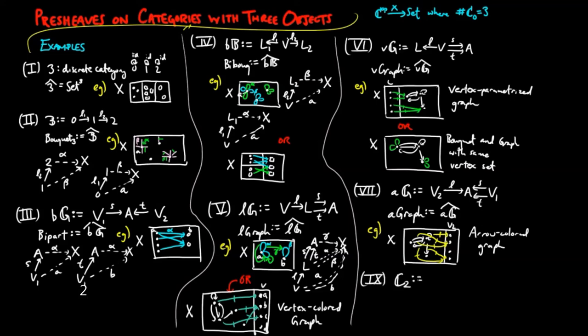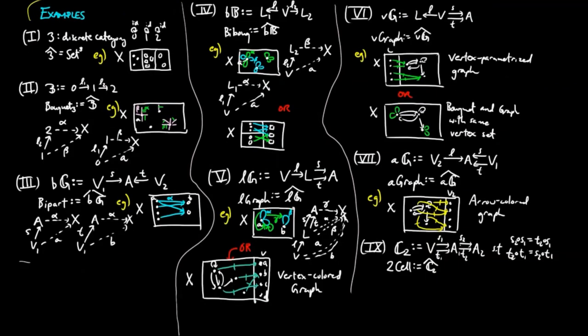And finally, if C2 is a category generated by the following graph subject to the relations S2 S1 equals T2 S1 and T2 T1 equals S2 T1, we obtain a category of pre-sheaves which have two arcs between one arcs, such that the source and target are fixed. For example, a small two category has an underlying two-cell structure.